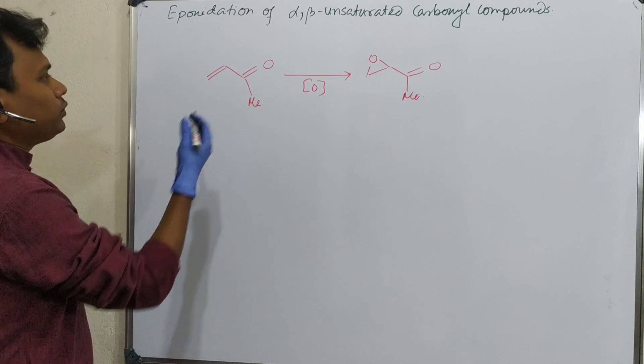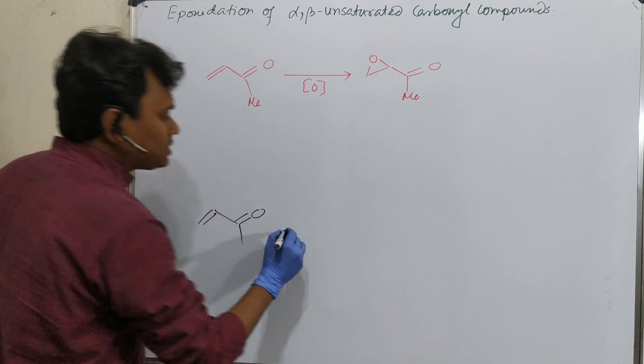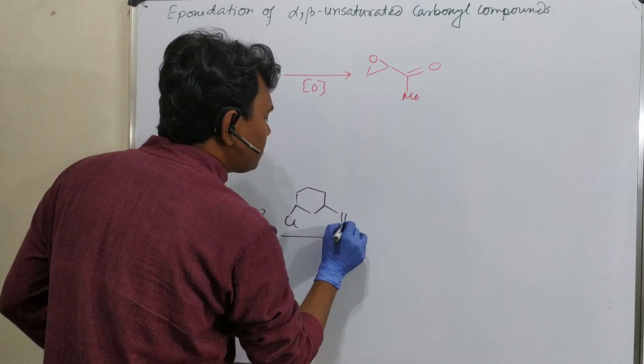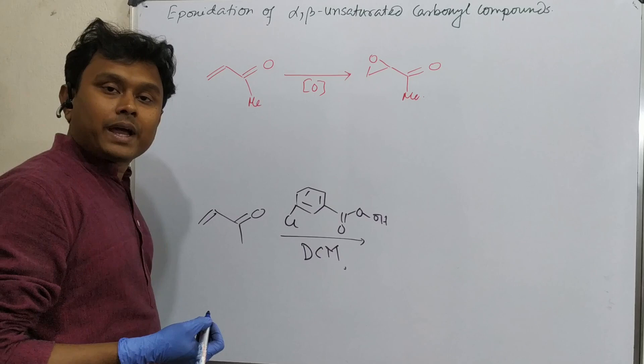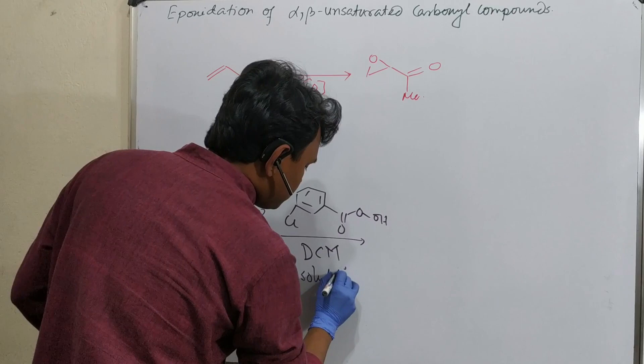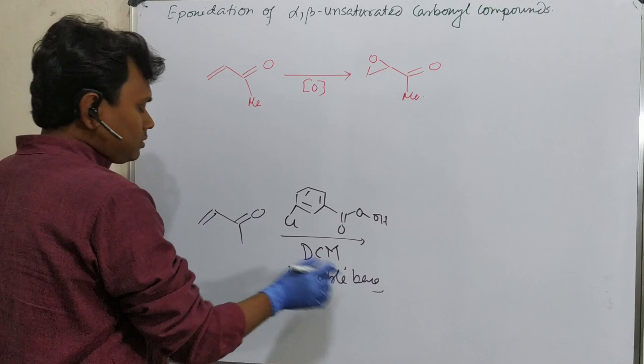If we follow the general technique - this alpha-beta unsaturated carbonyl compound plus if we take peracid like MCPBA, meta-chloroperoxybenzoic acid, if we do this in DCM in presence of some insoluble base...